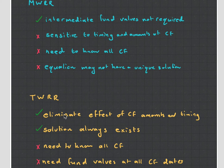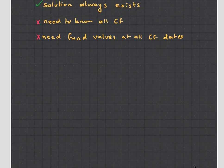Whereas the time-weighted rate of return, it eliminates the effect of cash flow amounts and timing, which is very good when it comes to comparing asset managers. The solution always exists. However, you also need to know all the cash flows, and you need to know the fund values at all the cash flow dates. And yeah, that's basically, those are the two.